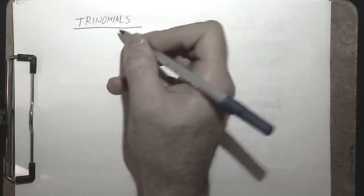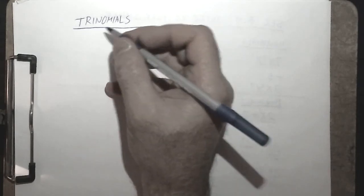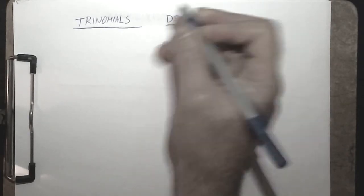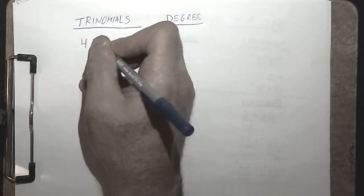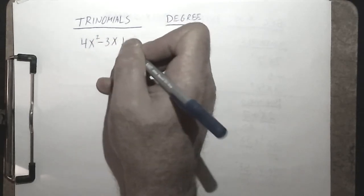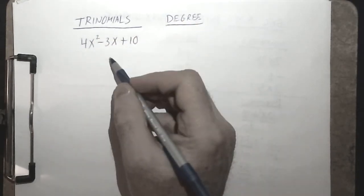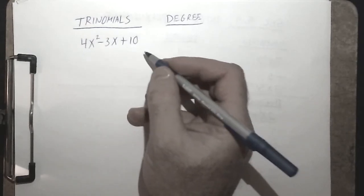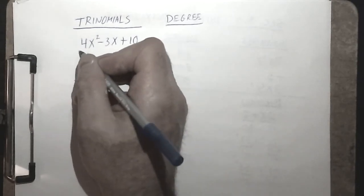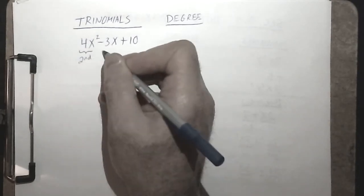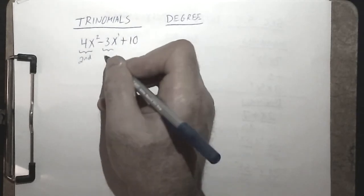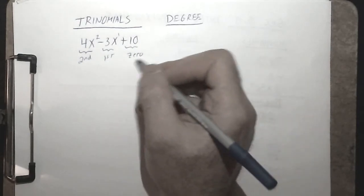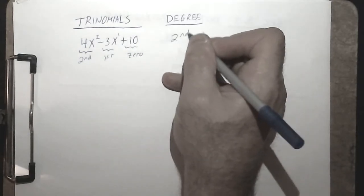Trinomials are three-term variable algebraic expressions. Terms are always separated by additions or subtractions. The degree of a trinomial is equal to the highest degree term. For example, x² + x + 1: the first term is of the second degree, the second term is a first-degree term, and the last term being a constant is of degree 0. So the degree of this entire trinomial would be second degree.